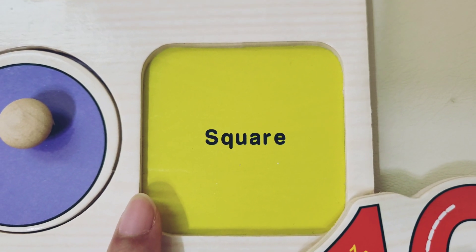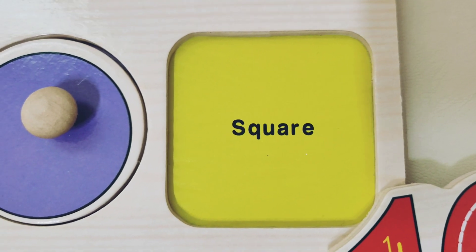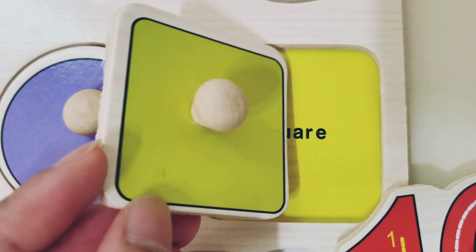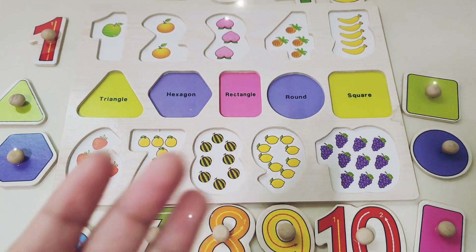And here we have a square. Yeah! Yellow square. This shape is a square. Let's put this shape here. Great job, kids.